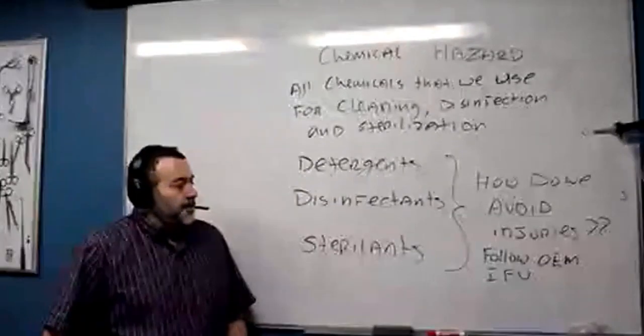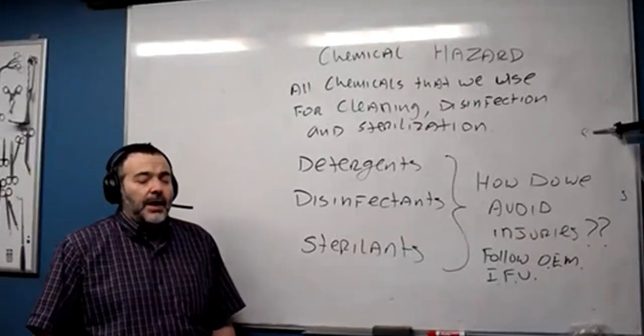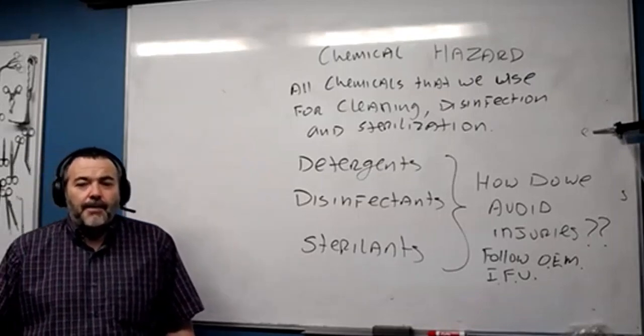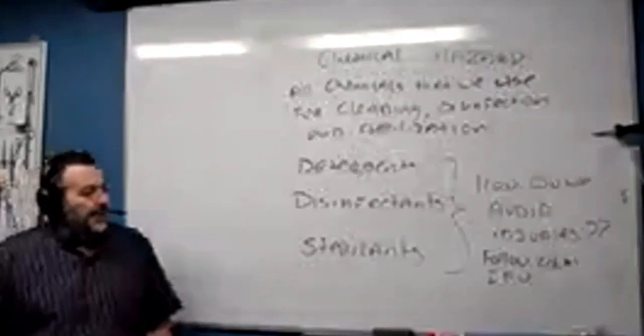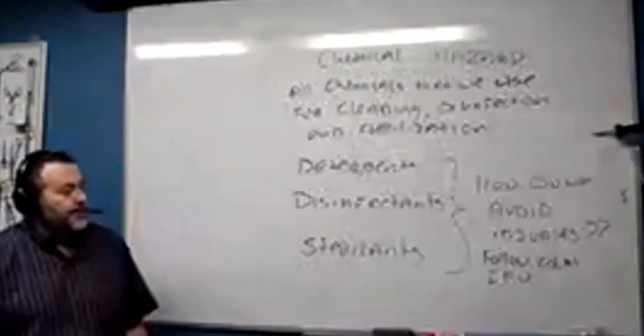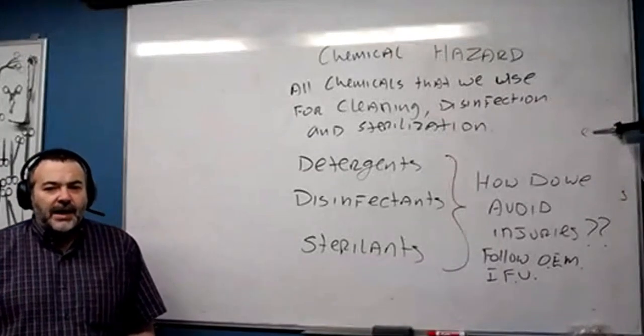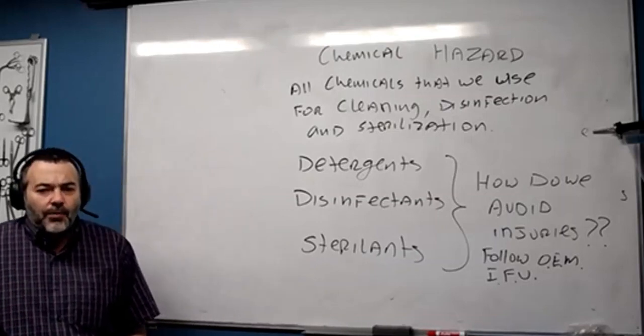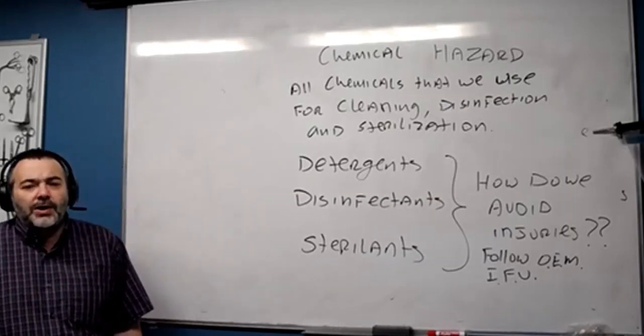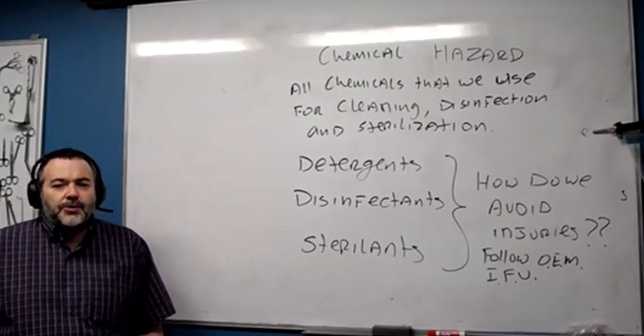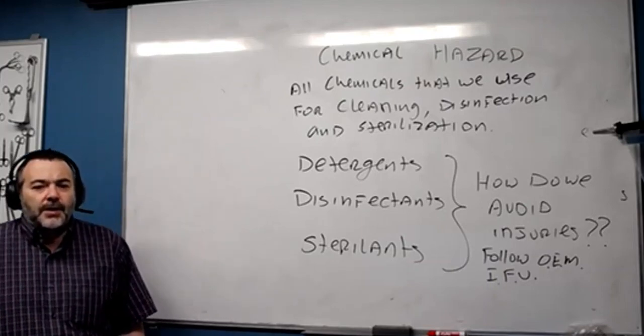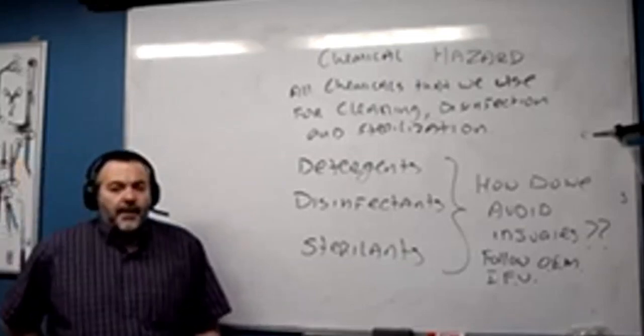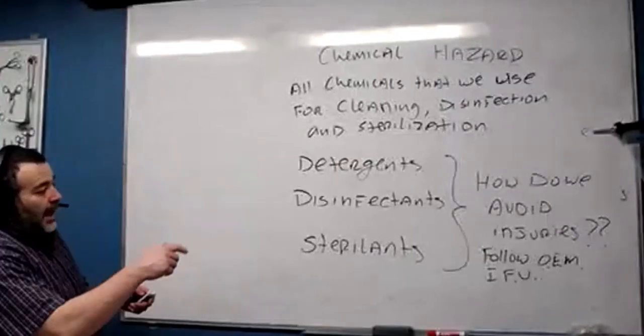OEM IFU - original equipment manufacturer's instructions for use. There is no better source for safety. OEM IFU is perhaps the most important acronym in the entire program. It's always the default position - we always go to original equipment manufacturer's instructions for use.